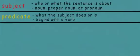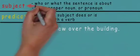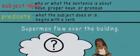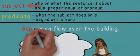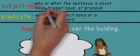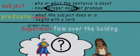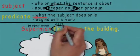Let's practice once more. 'Superman flew over the building.' Let's find the subject — who or what is the sentence about? When I read this sentence, I have a picture of Superman in my head, so Superman is the subject, and Superman is a proper noun. Now for the predicate — what did Superman do? He flew over the building, so 'flew over the building' is the predicate. Flew is the verb, so the predicate begins with a verb.